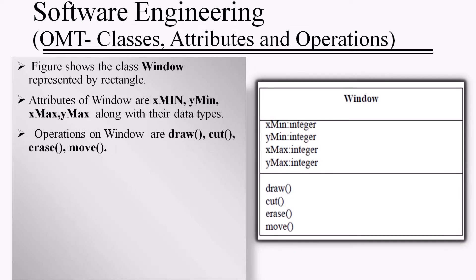Another example is the class Window. The name of the class is written in the first part of the class box. The attributes of Window — xmin, ymin, xmax, and ymax — along with their data types are written in the second part. The operations on the Window — draw, cut, erase, and move — are written in the third part of the class box.